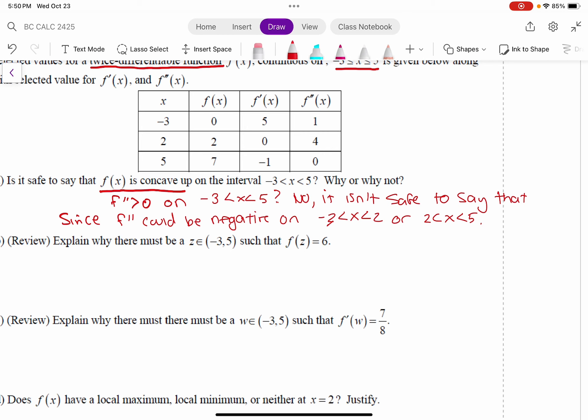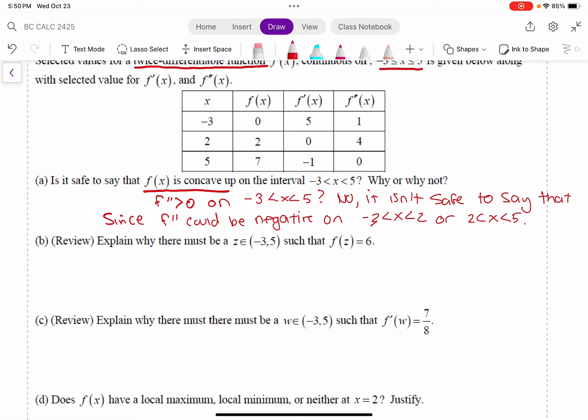Right? We have the selected values but we don't know if it's going to dip down, that 1 could dip down and become a negative number in between negative 3 and 2. So we don't know, we don't have the full picture.